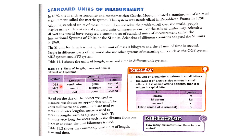In the CGS system: length is centimeter, mass is gram, time is second. In the MKS system: length is meter, mass is kilogram, time is second. In the FPS system: length is foot, mass is pound, time is second.